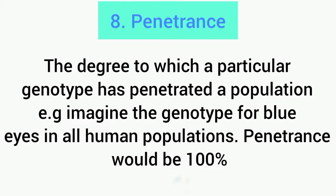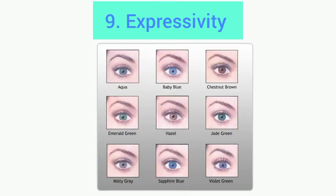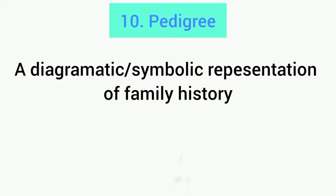For penetrance — penetrance is the degree to which a particular genotype has penetrated the population. If everybody had blue eyes, we would say that the trait for blue eyes has 100 percent penetrance. Expressivity is the degree to which a particular trait is expressed — even though we talk about blue eyes, the blue eyes will be expressed differently across the human population, as you can see here.